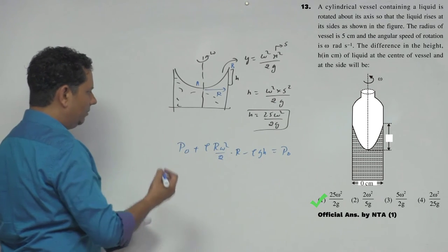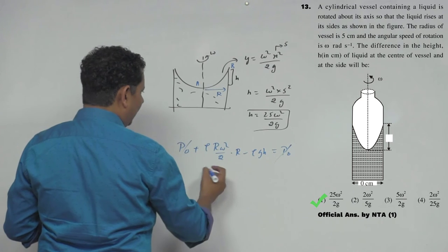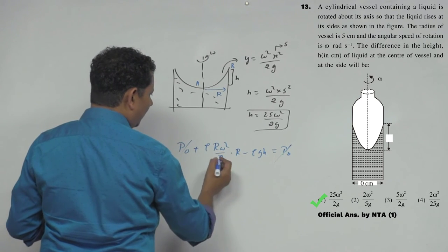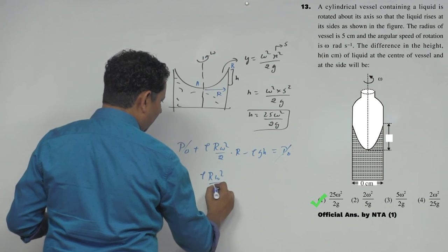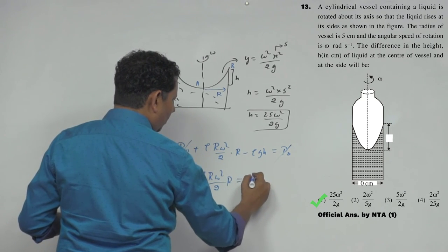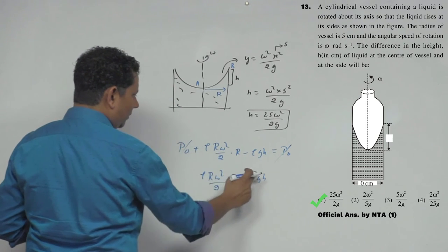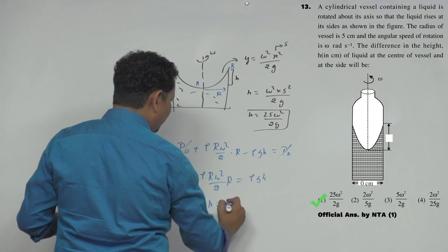You have the equation between A and B using Bernoulli's equation. P₀ and P₀ will get cancelled. When you equate these two, ρrω²/2r will be equal to ρgh. So ρ will also get cancelled.